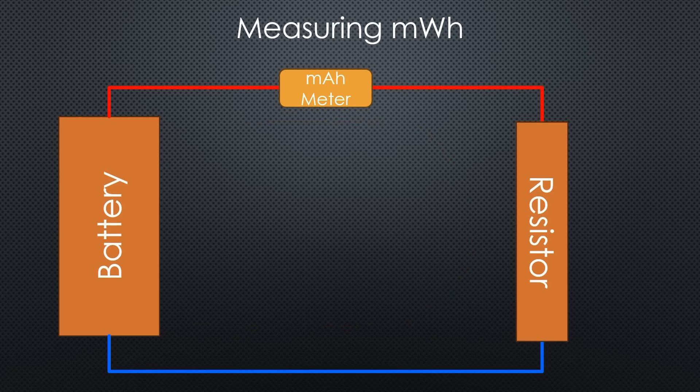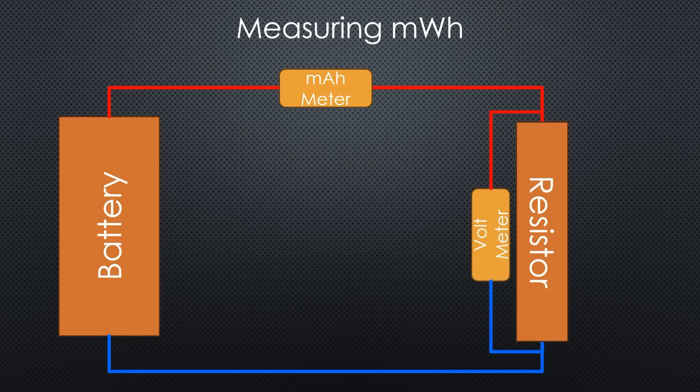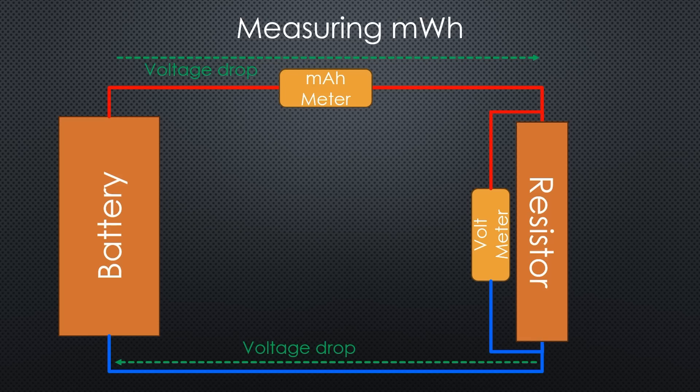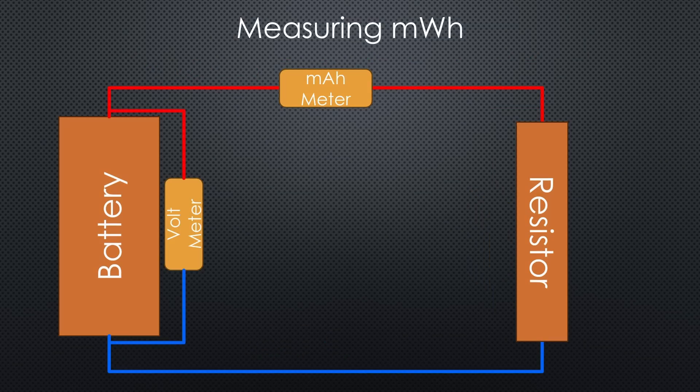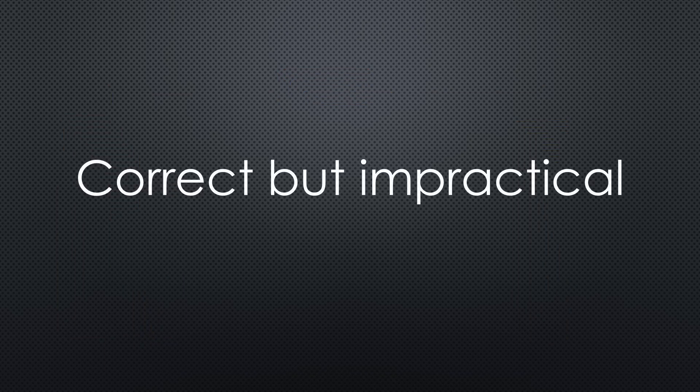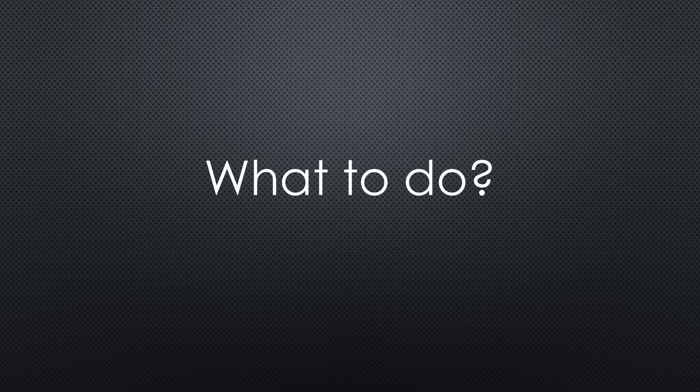This is different from measuring mWh. The ampere meter can stay where it is. But if the voltmeter is here, the loss of these wires reduces the accuracy of your measurement because they behave like small resistors that create a voltage drop. Correct would be to measure the voltage right at the battery. Placing the meters right at the battery poles is often impractical. What to do?